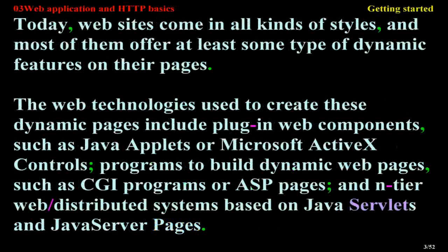Today, websites come in all kinds of styles, and most of them offer at least some type of dynamic features on their pages. The web technologies used to create these dynamic pages include plug-in web components such as Java applets or Microsoft ActiveX controls, programs to build dynamic web pages such as CGI programs or ASP pages, and entire web distributed systems based on Java servlets and Java Server Pages.